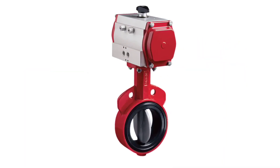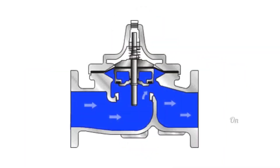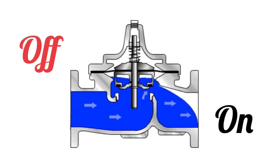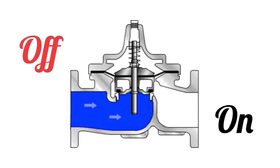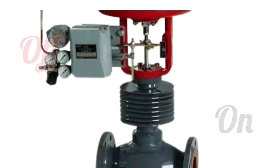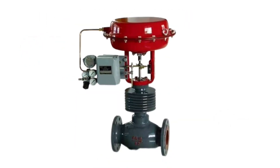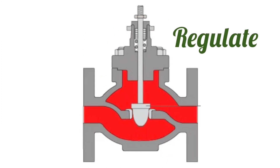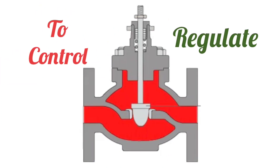On-off valves are used to turn on or off the flow of fluid, whereas control valves are used to regulate the flow of fluid. Regulate means to control.